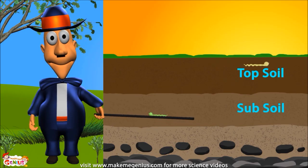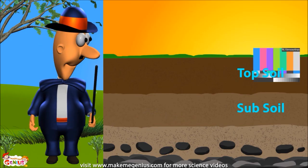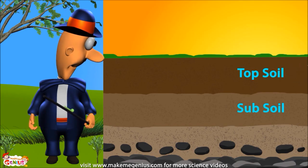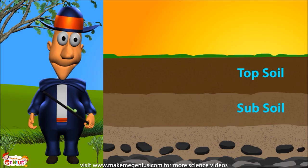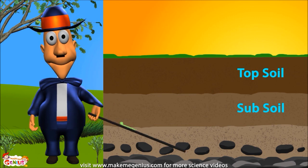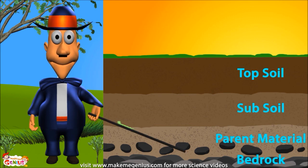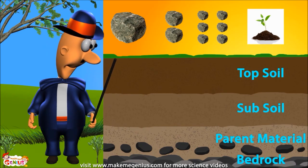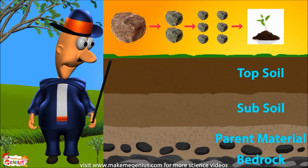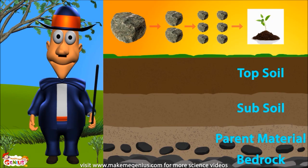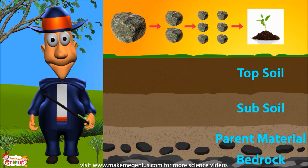This part is called subsoil and has small particles of rock. This part is called parent material — these are the parent rocks which get broken down slowly and become smaller and smaller to form the soil. These big rocks are like grandparents of the soil. They break down and form the parent material. Then the parent rocks break down due to pressure, temperature, and water — this is how subsoil and topsoil are formed.